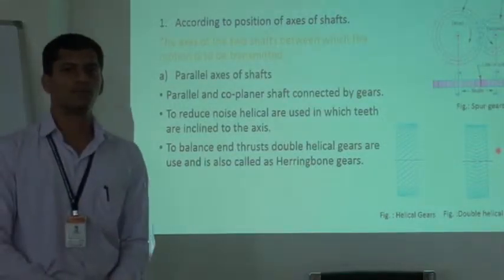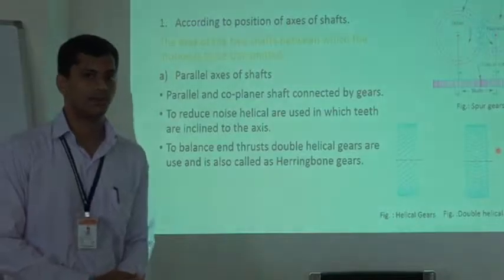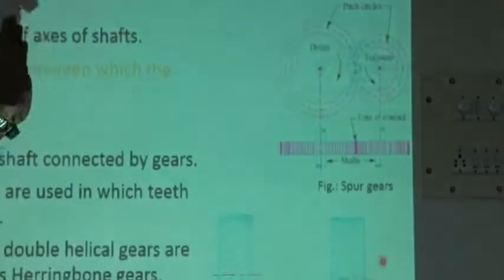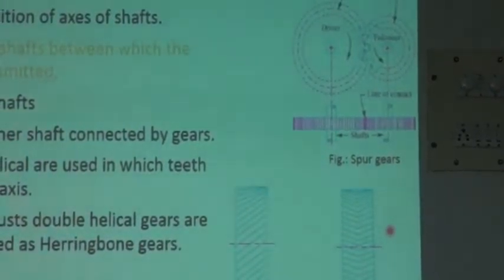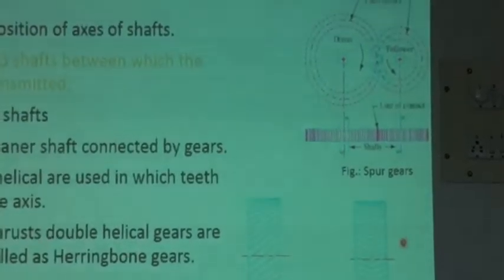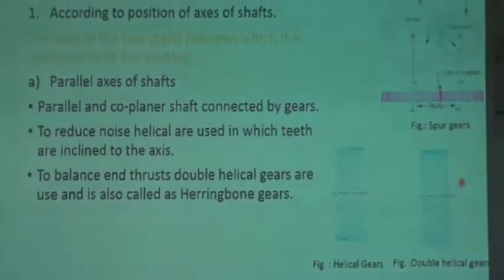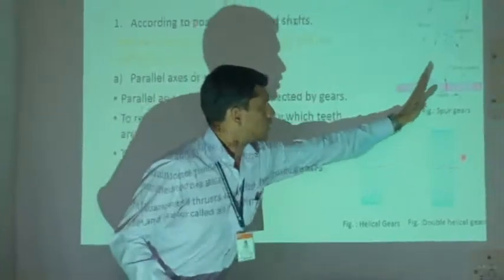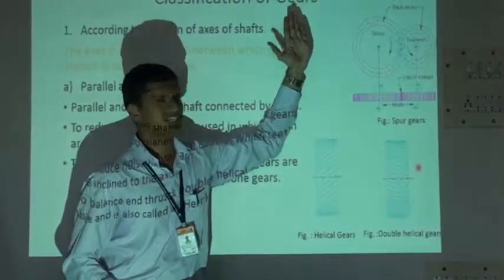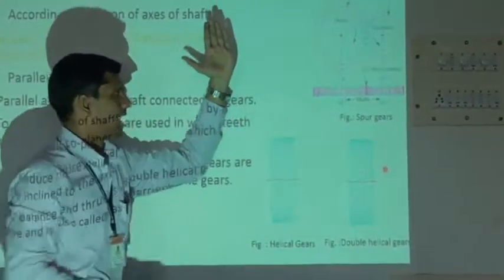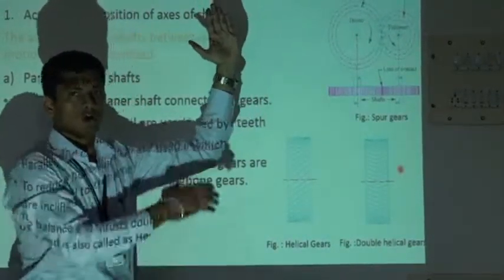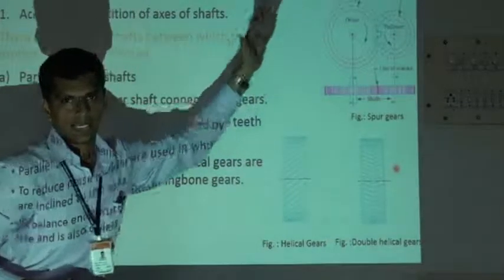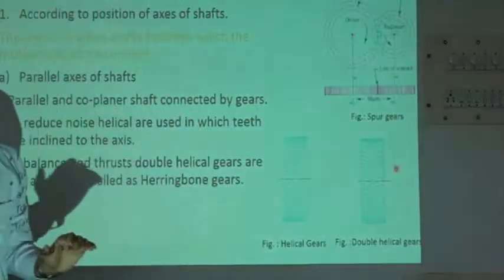Now we are moving towards classification of gears. First classification is according to position of axis of shaft. As we know, the two shafts shown in this video are parallel to each other. So first classification is the parallel axis of shaft — parallel and coplanar shafts connected to each other. These two gears are in the same plane. Here, two gears are parallel and coplanar, connected with the help of gear. That assembly is known as a spur gear, because the gear teeth are parallel to the axis.